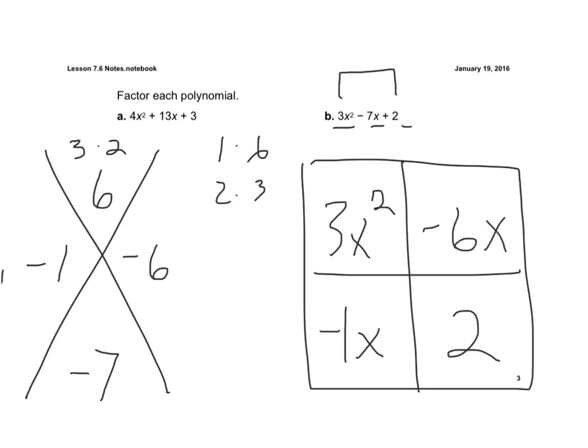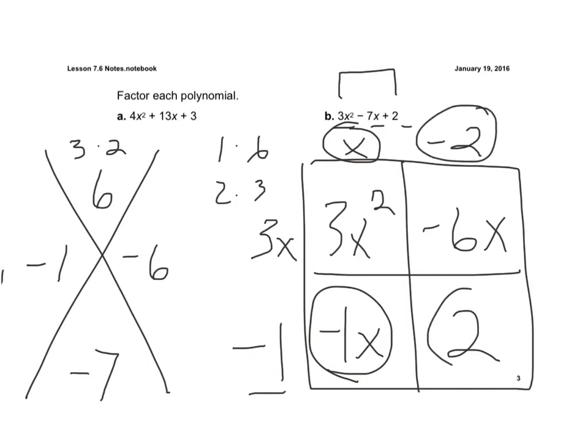So again, here in this first row, 3x is common in both terms. So if I factor that out, I'm left with an x and a minus 2. And now what times x gives me a negative 1x? It would be a negative 1. And now if I check, negative 1 times negative 2 is a positive 2. So now I'm done. So across the top, I have x minus 2. And down the side, I have 3x minus 1.